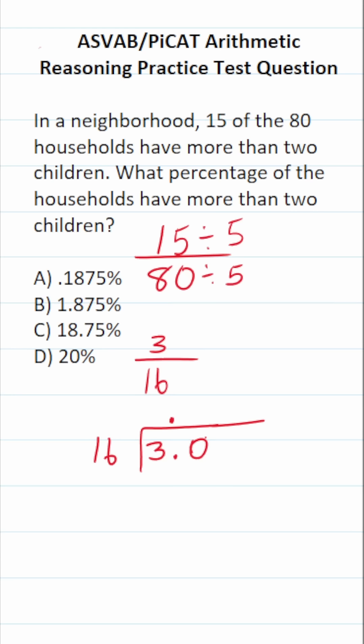How many times does 16 go into 30 without going over? That's going to be one time. 16 times 1 is 16. What is 30 minus 16? If you can't do that mentally, work it out. 0 minus 6 we can't do. This becomes 2, this becomes 10. 10 minus 6 is 4. 2 minus 1 is 1.